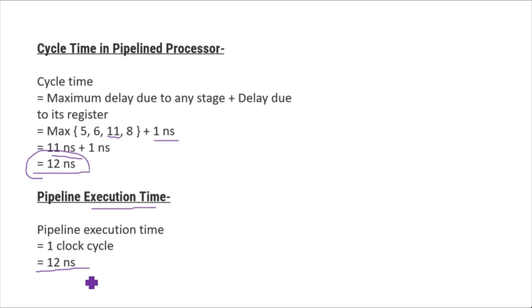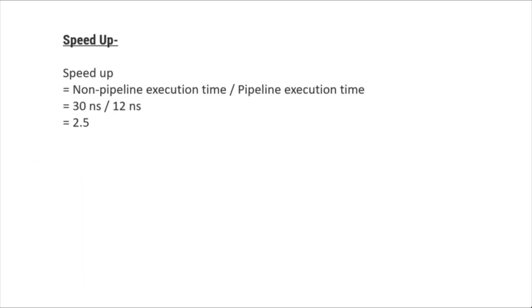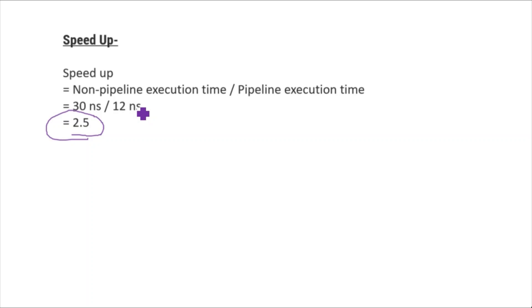Speed-up equals non-pipeline execution time divided by pipeline execution time: 30 nanoseconds divided by 12 nanoseconds gives a speed-up of 2.5. This means the processor speed has increased by a factor of 2.5 when converted from non-pipeline to pipeline — previously taking 30 nanoseconds, now taking only 12 nanoseconds to execute.